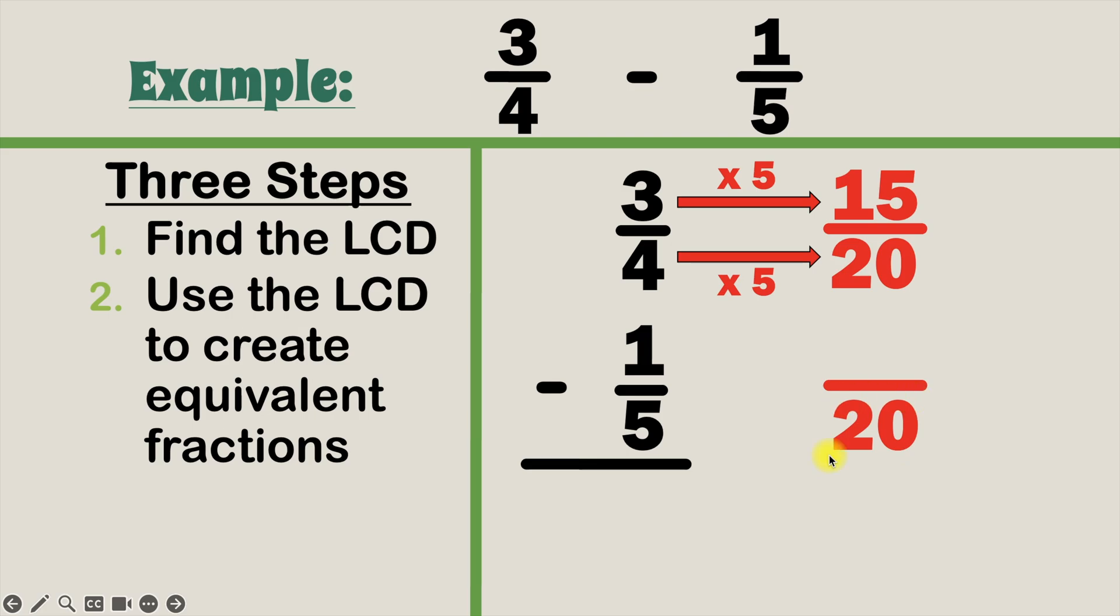Now let's look at our second fraction. Five times what equals 20? Well that's 5 times 4. And because we need to create equivalent fractions, however we multiply the bottom we're going to multiply the top. So since we did 5 times 4, now we'll do 1 times 4, and 1 times 4 equals 4. So our equivalent fraction is 4 over 20.